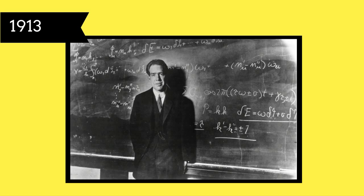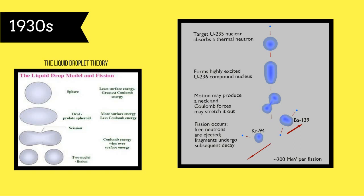During the late 1930s, Bohr went on to work with a group of scientists who were doing research on nuclear fission, and he contributed the liquid droplet theory. According to the model, the neutrons and protons behave like the molecules in a drop of liquid. If given sufficient extra energy, the spherical nucleus may be distorted into a dumbbell shape and then split into two equal fragments, releasing energy.